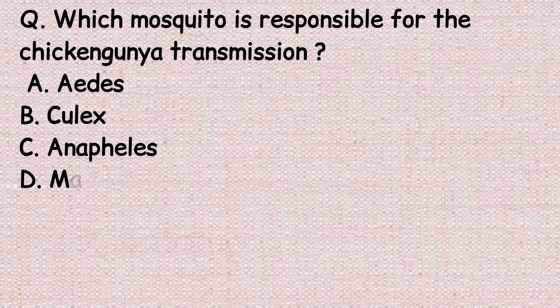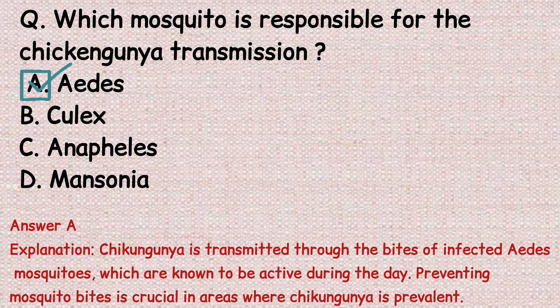The next question: which mosquito is responsible for chikungunya transmission? Option A: Aedes. Option B: Culex. Option C: Anopheles. Option D: Mansonia. The correct answer is option A, Aedes. Chikungunya is transmitted through the bite of an infected Aedes mosquito, which is known to be active during the daytime. Preventing mosquito bites is crucial in areas where chikungunya is prevalent.